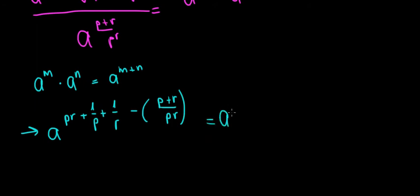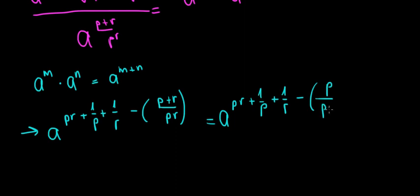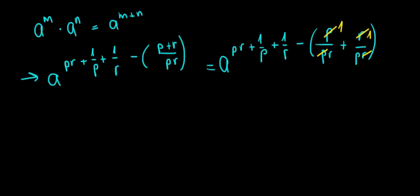Now let's simplify. We can deconstruct the p plus r in the numerator: p plus r over pr equals p over pr plus r over pr. Simplifying, p cancels with p leaving 1 over r, and r cancels with r leaving 1 over p. So the exponent becomes: pr plus 1 over p plus 1 over r minus 1 over r minus 1 over p.